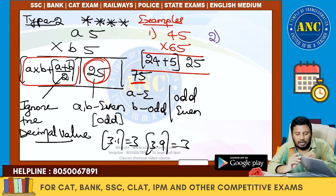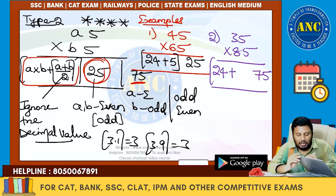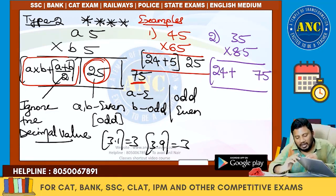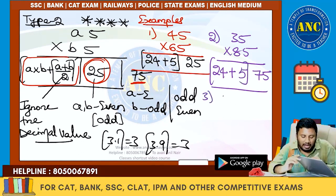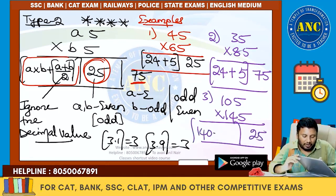Example 2: 35 × 85. Even 5 into odd 5 – last two digits is 75. A × B = 3 × 8 = 24. A + B by 2 = 11 / 2 = 5.5, take 5. Leading digits: 24 + 5 = 29. Answer is 2975. Example 3: 105 × 45. 10 × 14 = 140. 24 / 2 = 12. Leading digits: 140 + 12 = 152. Answer is 15225.